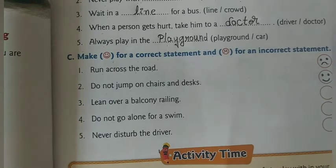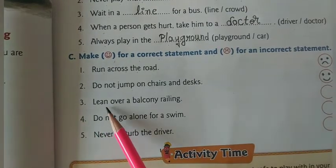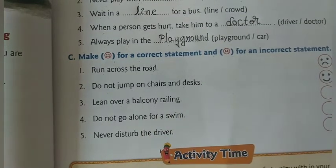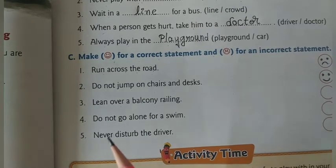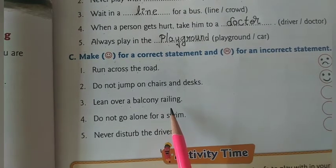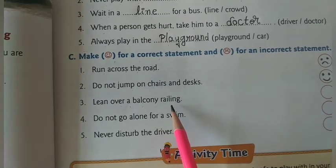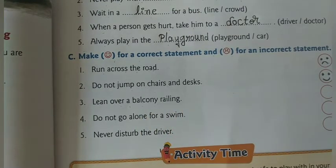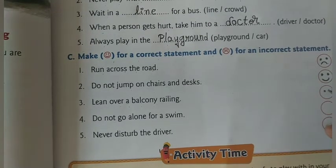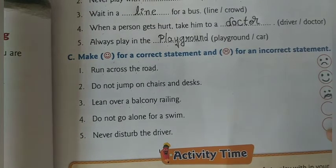Third statement: lean over a balcony railing. This is an incorrect statement, so we draw a sad face.